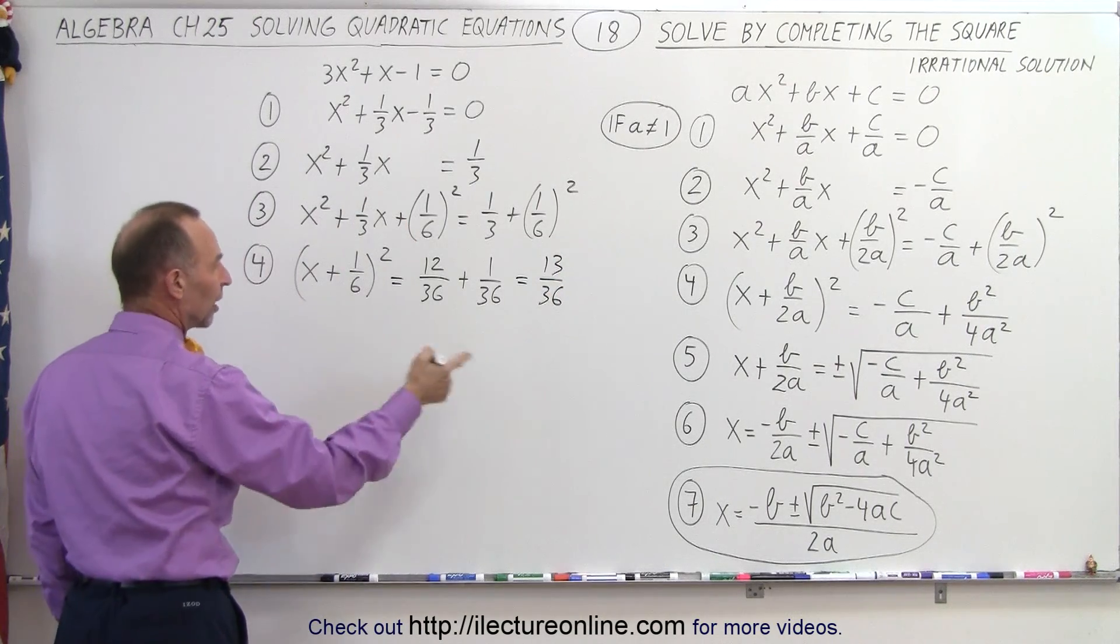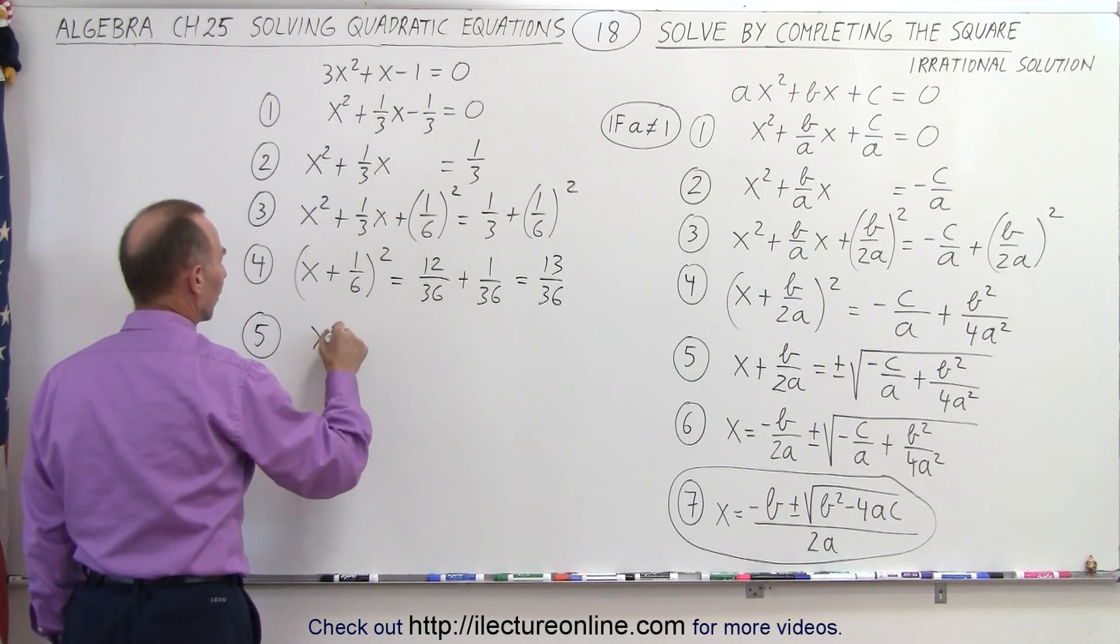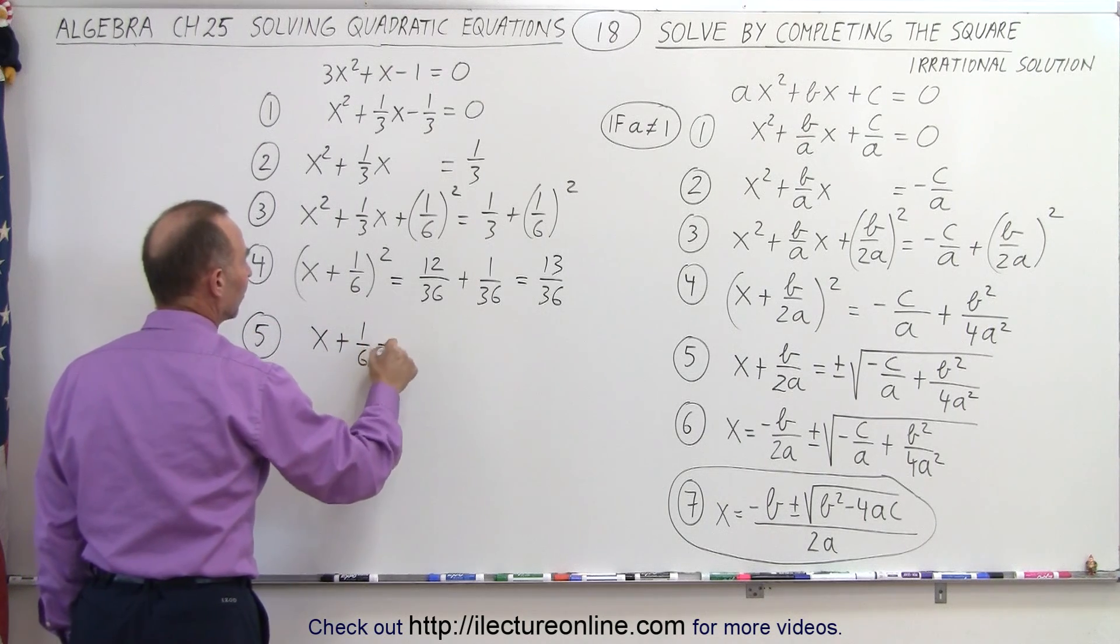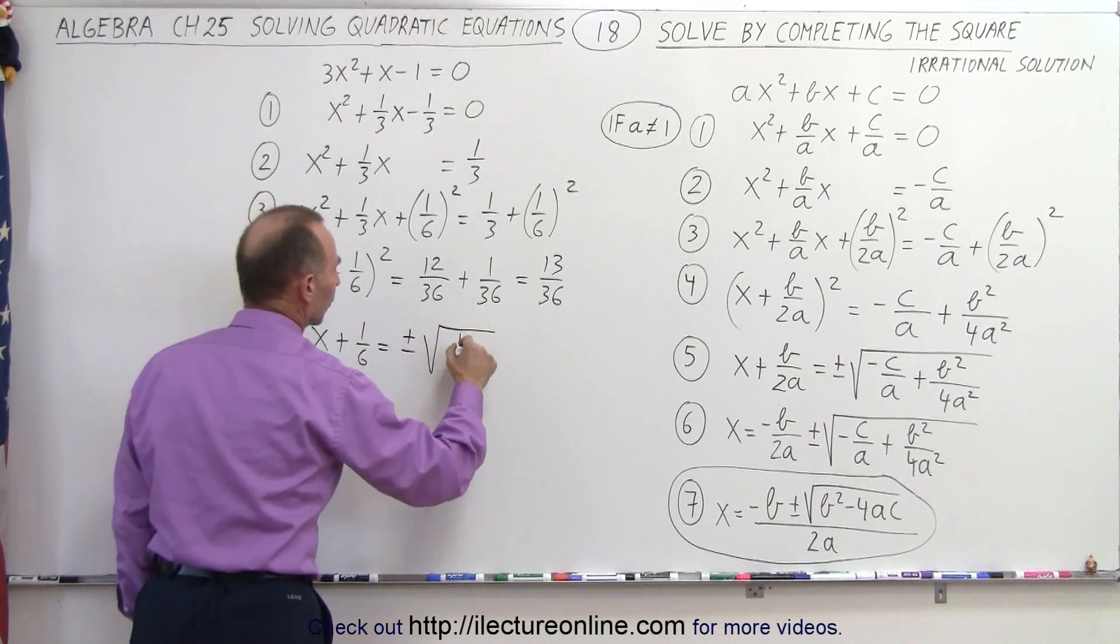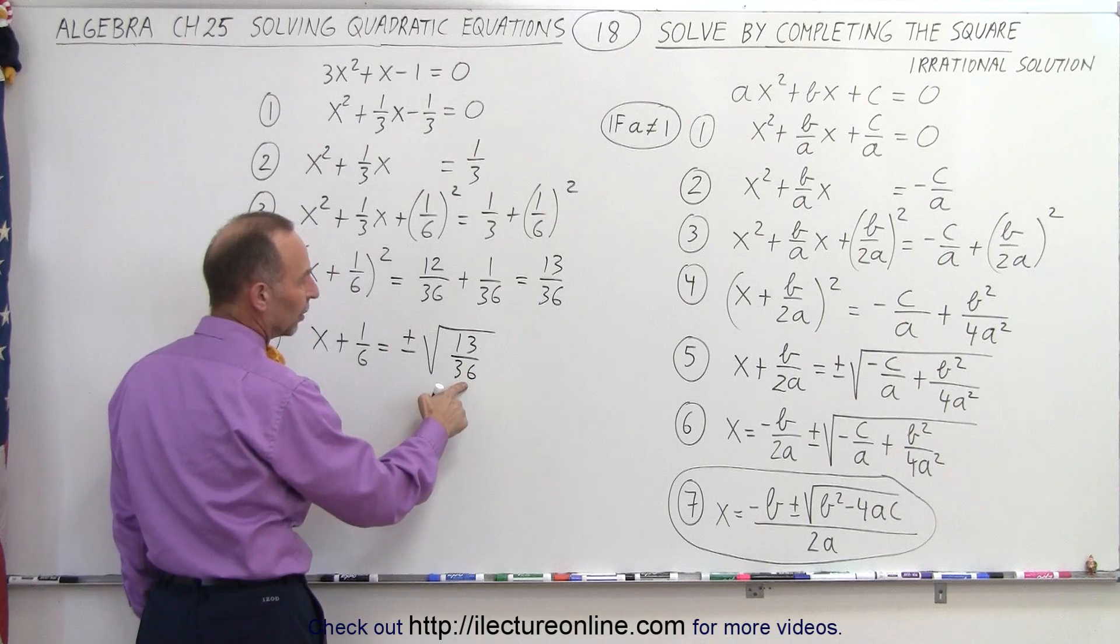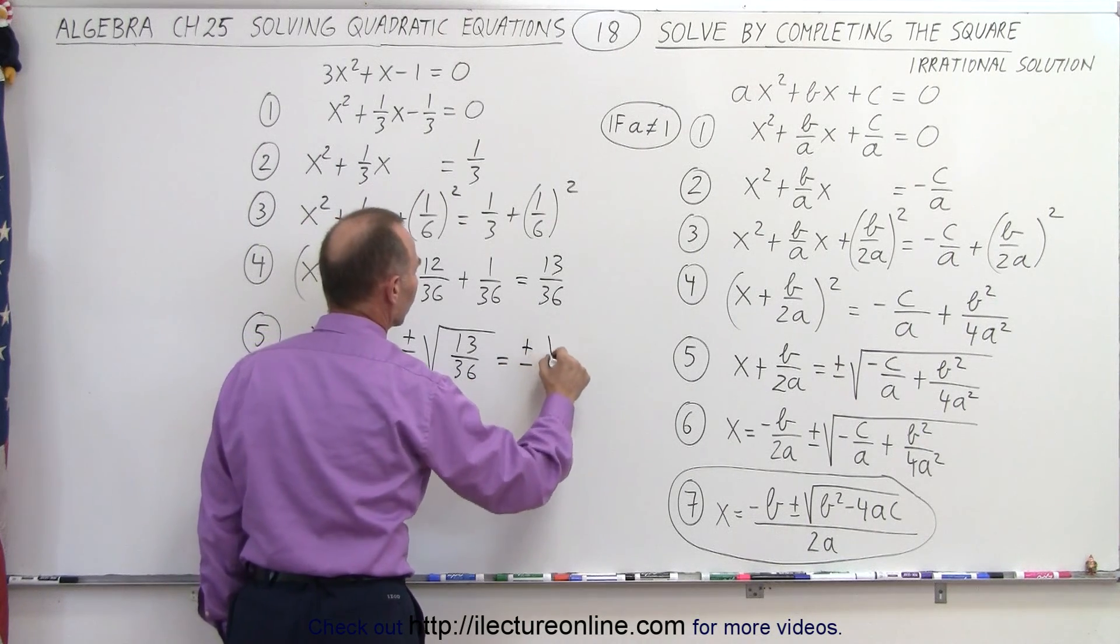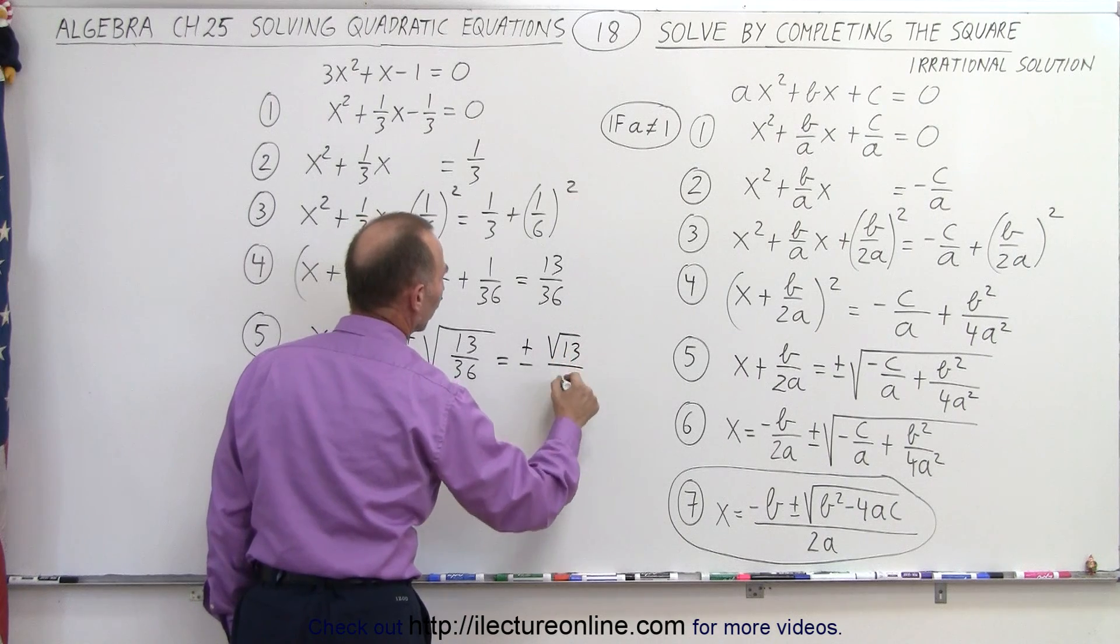So now I can go ahead and do step number 5. I can take the square root of both sides. So we have x plus 1 over 6 is equal to plus or minus the square root of 13 over 36. But notice that the denominator, we can find the square root of that. So this is equal to plus or minus the square root of 13 over 6.